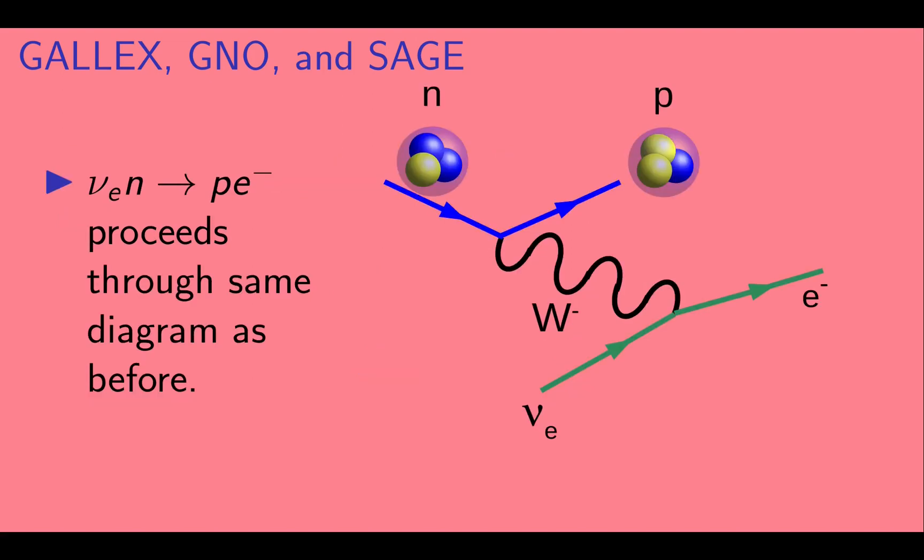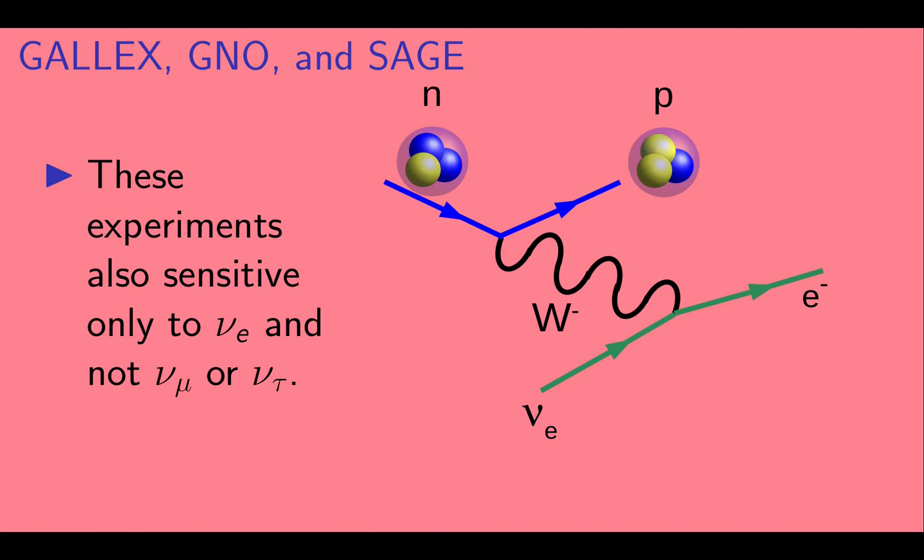So, not surprisingly, this process proceeds through the same diagram that we saw before. And, just like Homestake, these experiments are only sensitive to electron neutrinos, and not muon or tau neutrinos, as there is not enough energy in a solar neutrino to make a muon or a tau.